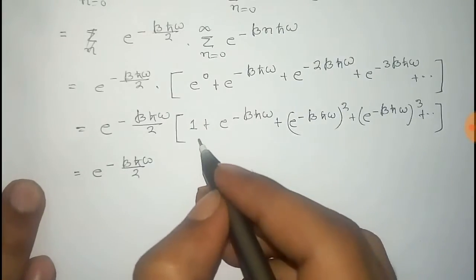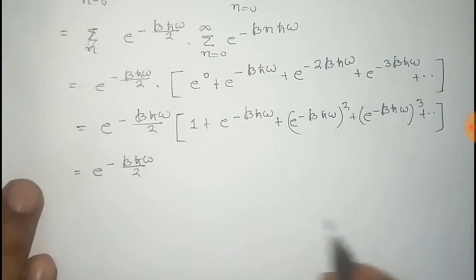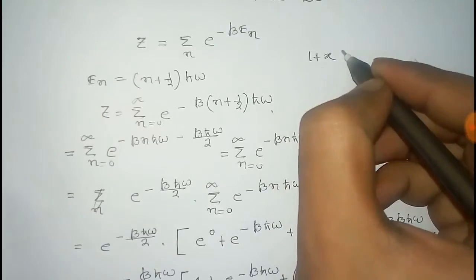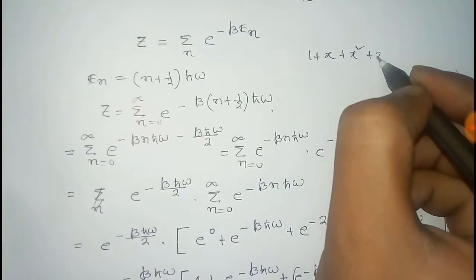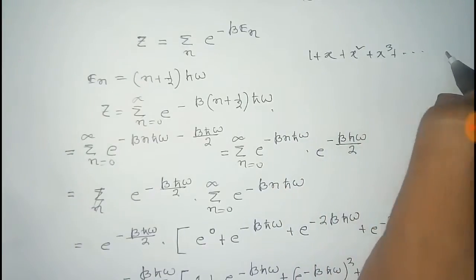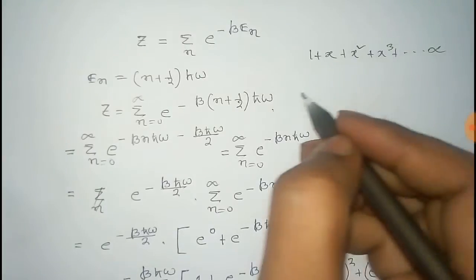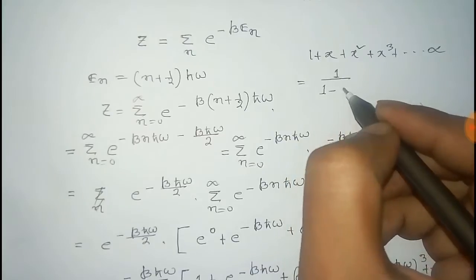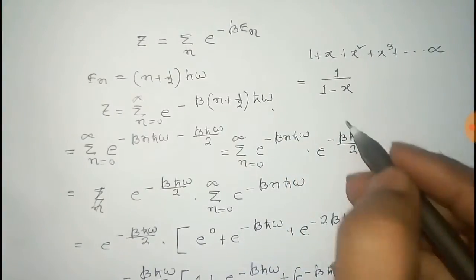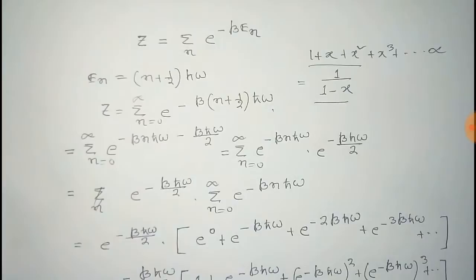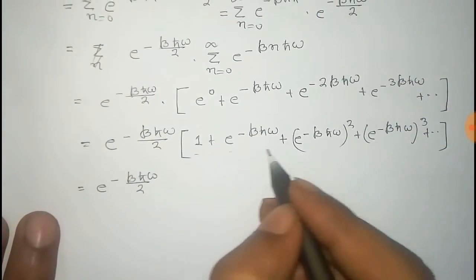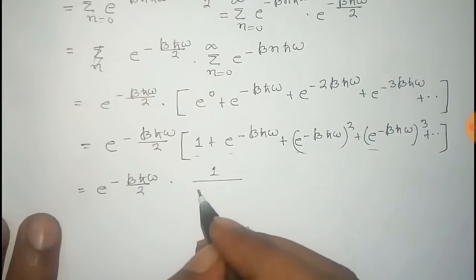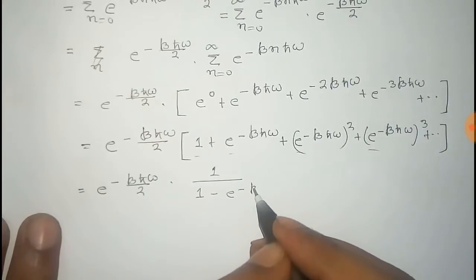For this sum, we know that if there is a series like 1 plus x plus x squared plus x cubed and so on to infinity, it can be written as 1 over 1 minus x. We use this formula here where we take x equal to e to the power minus beta h-bar omega. So the summation becomes 1 over 1 minus e to the power minus beta h-bar omega.